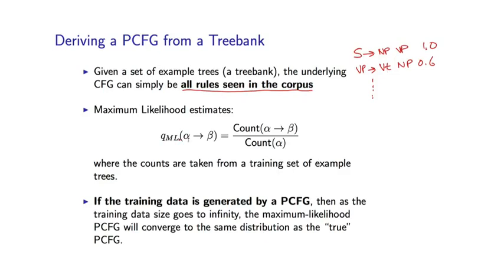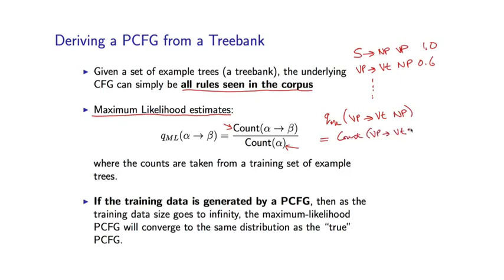How do we estimate the parameters? So q of some rule alpha goes to beta is the probability associated with that rule. We're going to make use of maximum likelihood estimates, which have a very simple and intuitive form. To estimate the parameter for some rule alpha goes to beta, we take a ratio: on the denominator we have the number of times we've seen alpha, and on the numerator we have the number of times we've seen the entire rule. For example, q-ML of VP goes to VT NP would simply be count of VP goes to VT NP divided by count of VP.